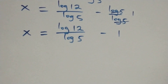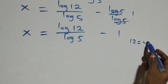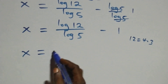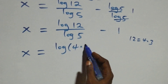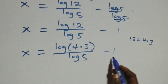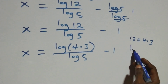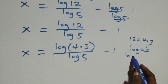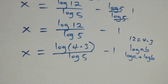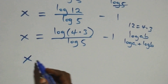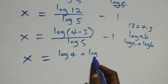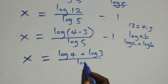We can express 12 as 4 times 3. This gives us x equals to log(4 times 3) over log 5 minus 1. This follows from the logarithm product rule, where log a times b is the same as log a plus log b. So x equals to log 4 plus log 3 over log 5 minus 1.